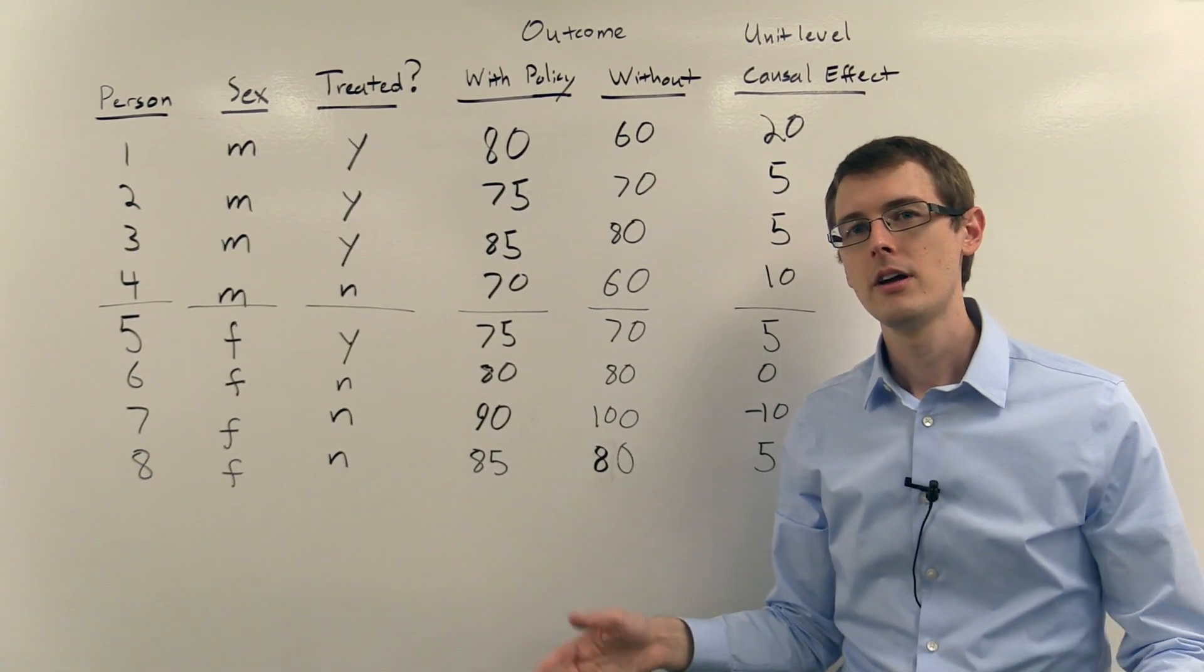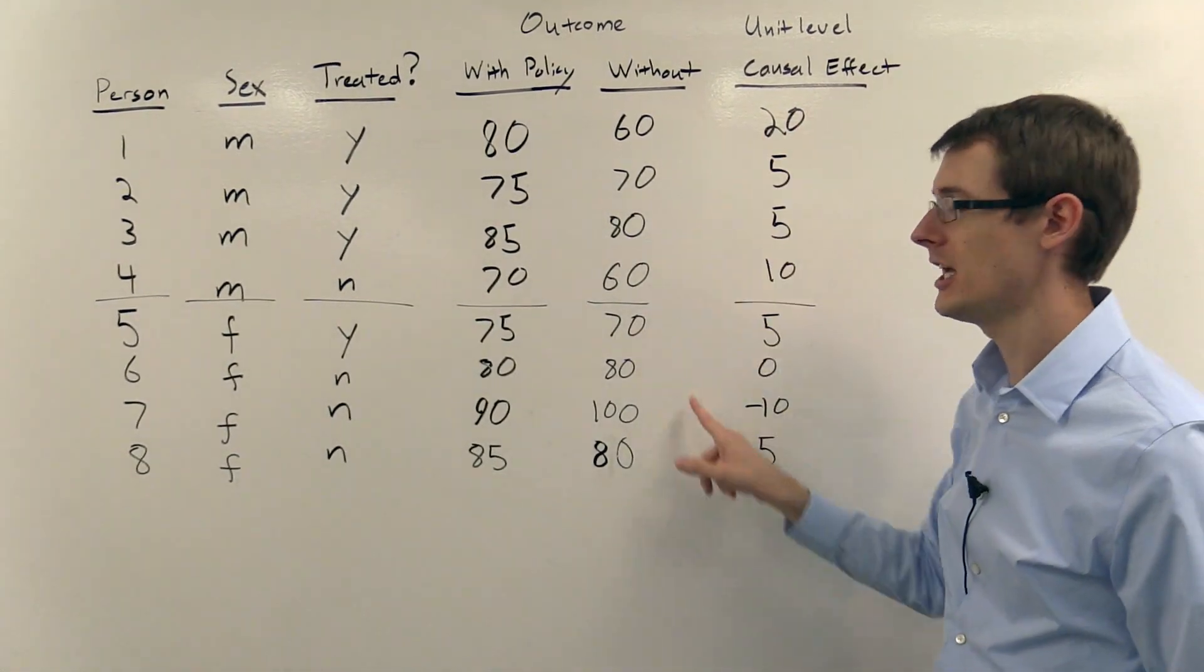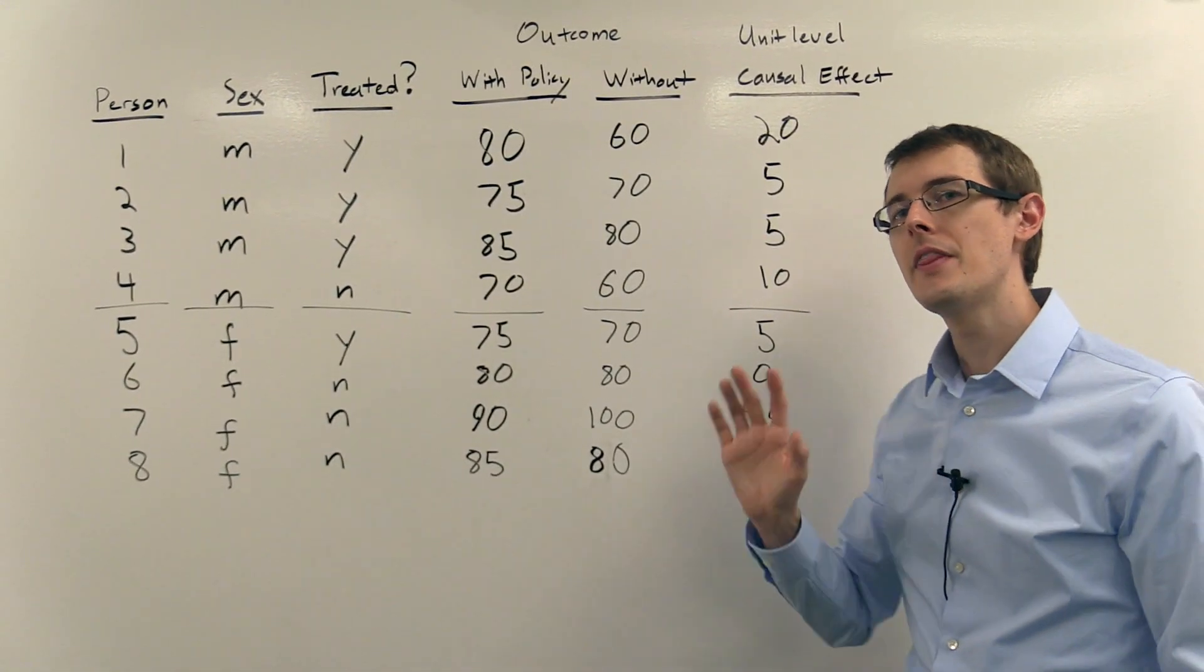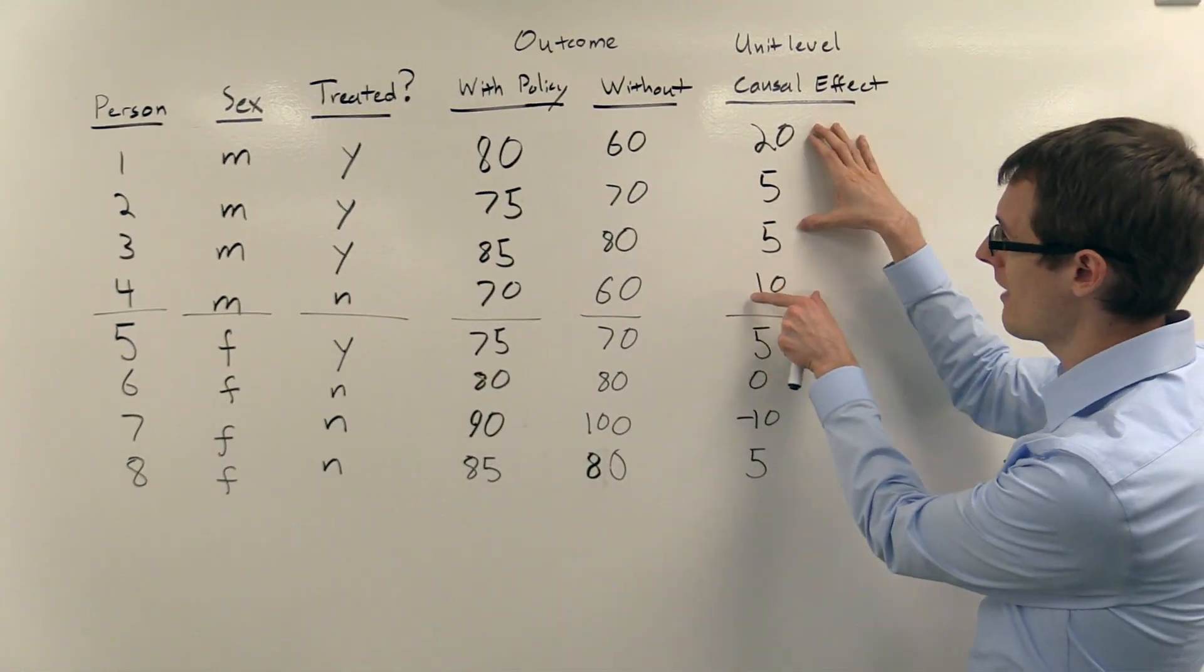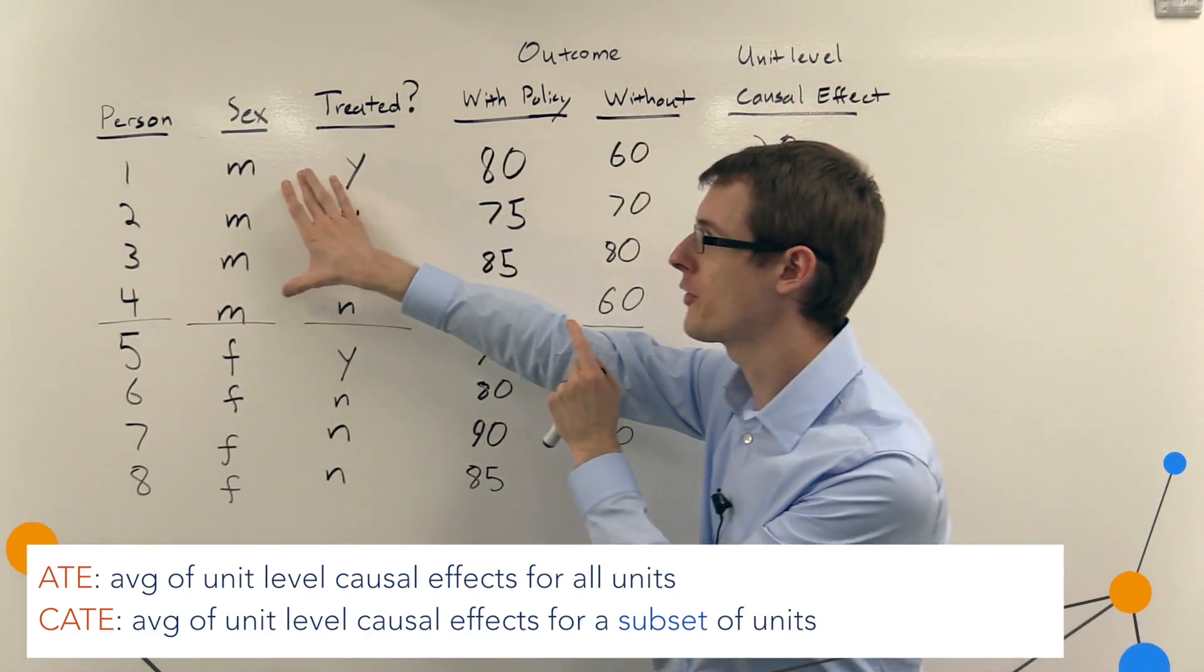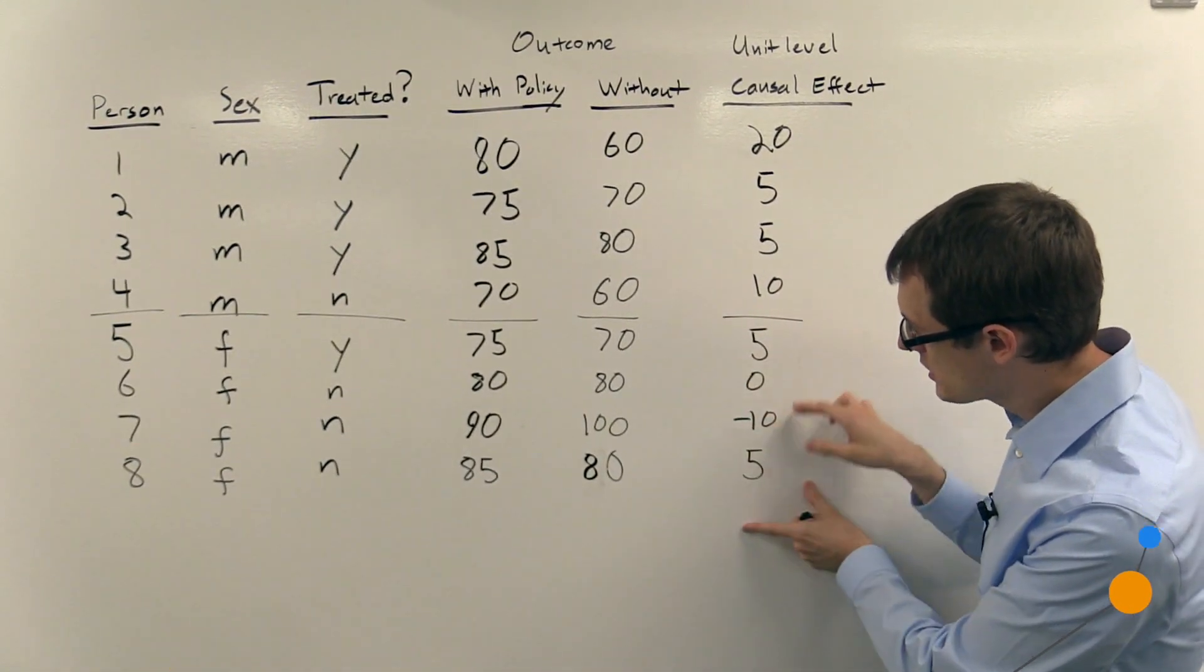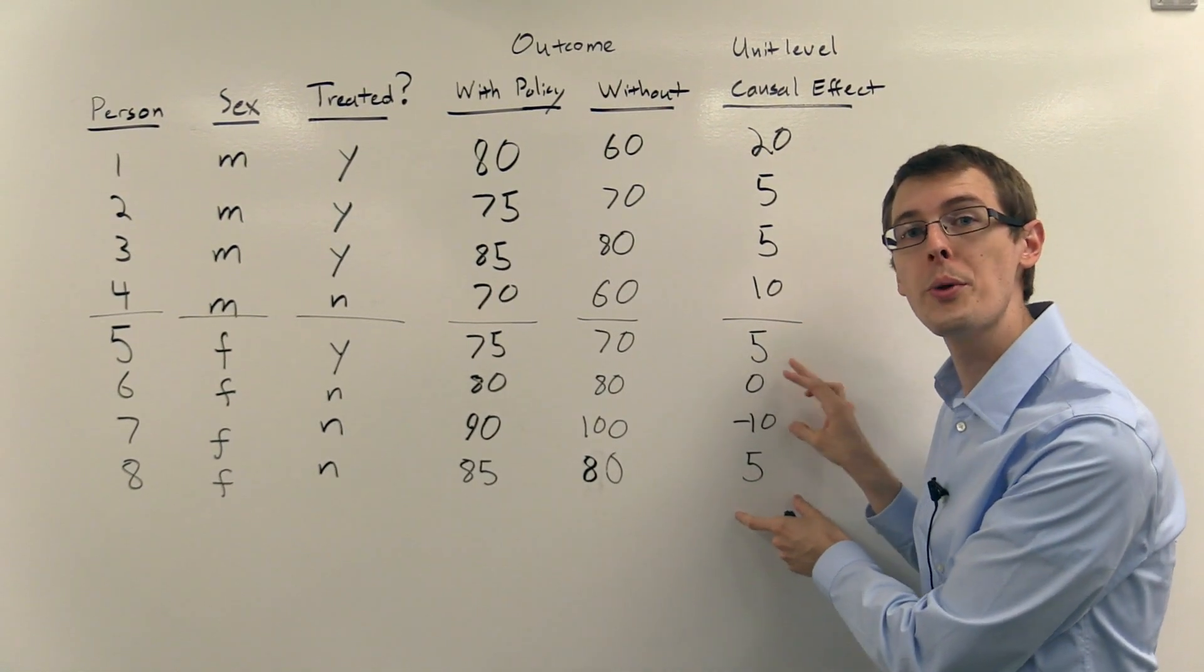So remember back from earlier, the average treatment effect is just the average of these eight numbers. It's the average unit causal effect for everybody in the population. The conditional average treatment effect for men is just the average of these four numbers, just the average unit level causal effects only for the men. And similarly, the conditional average treatment effect for females is just the average of these four numbers, the average of the unit level causal effects only for females.